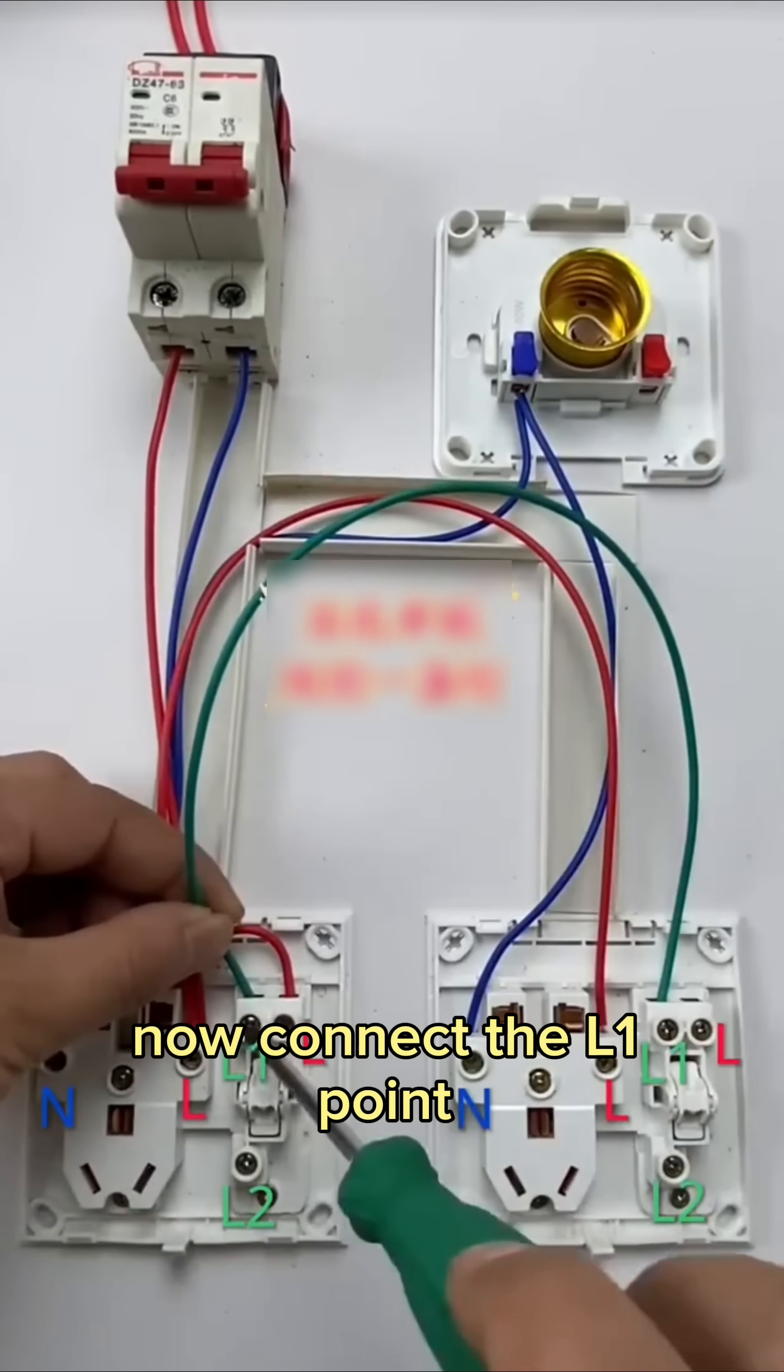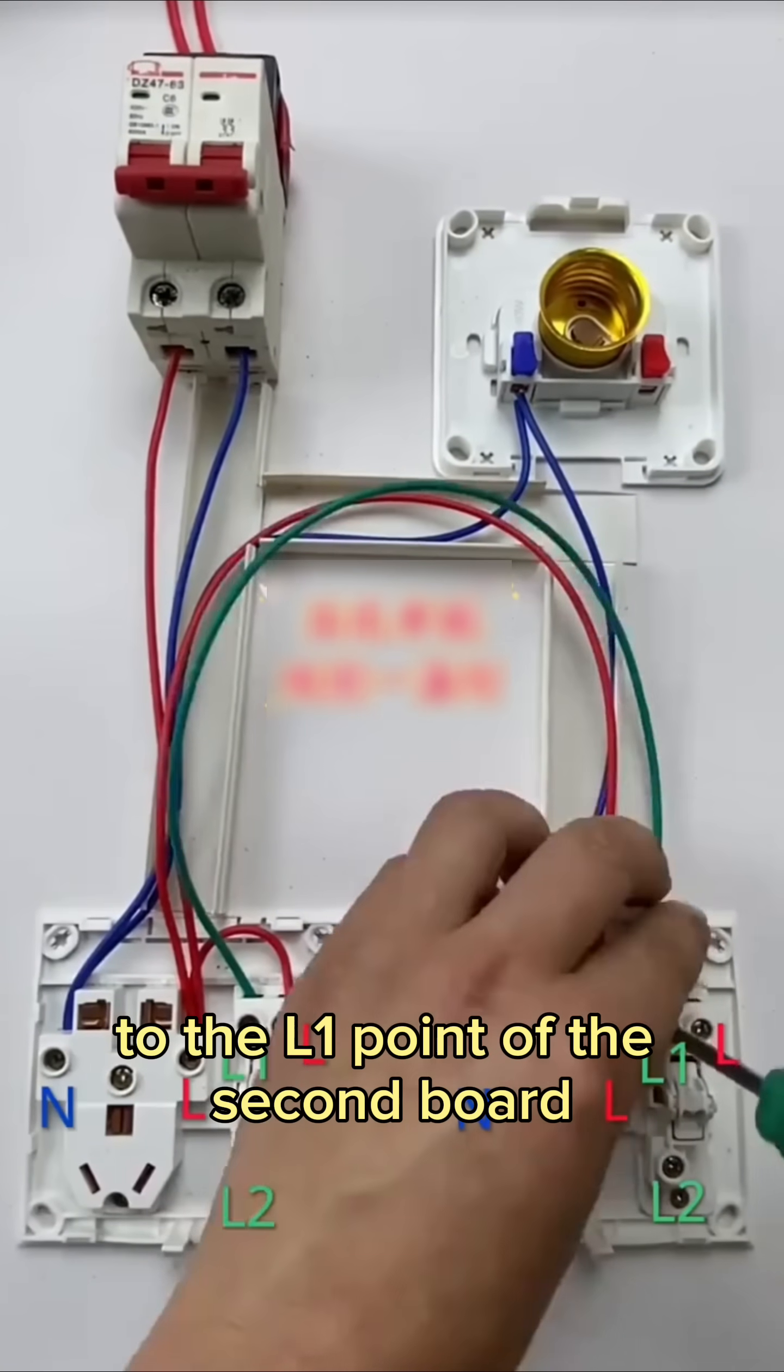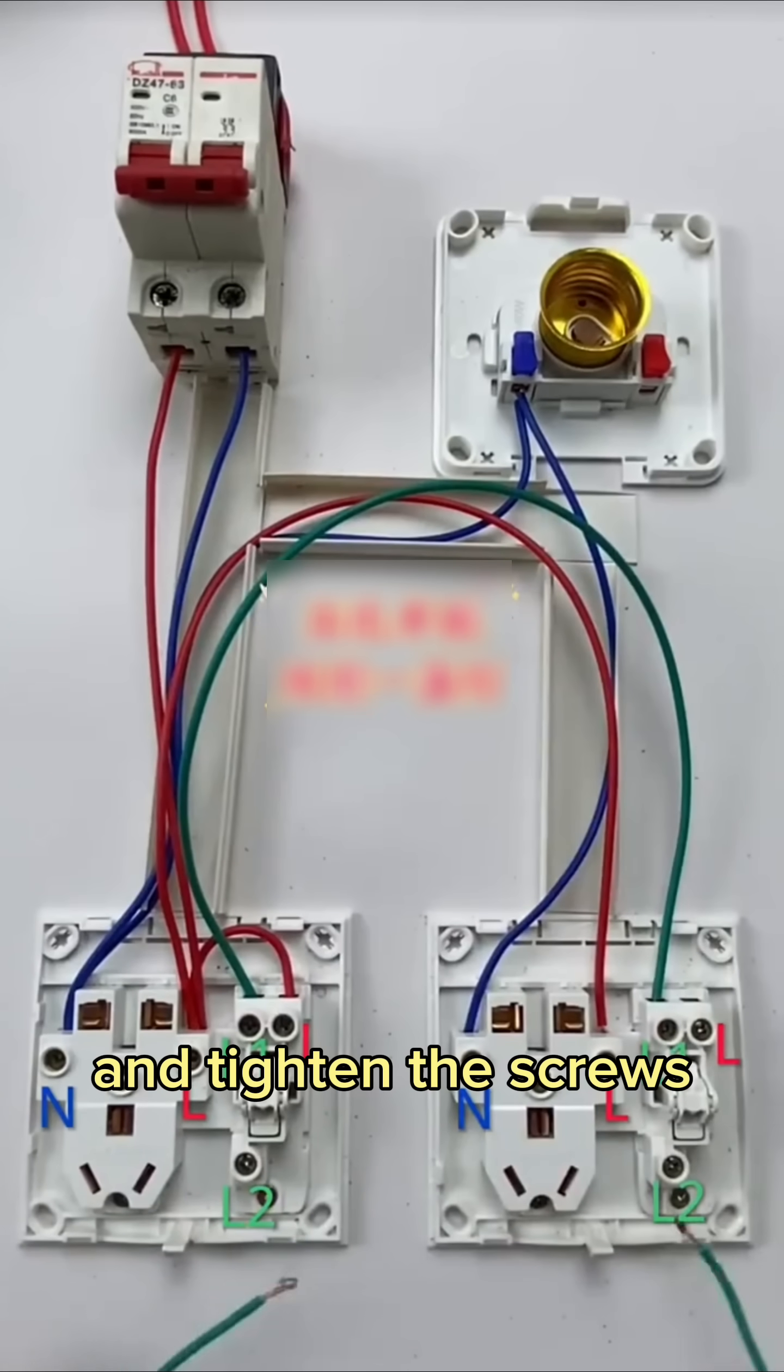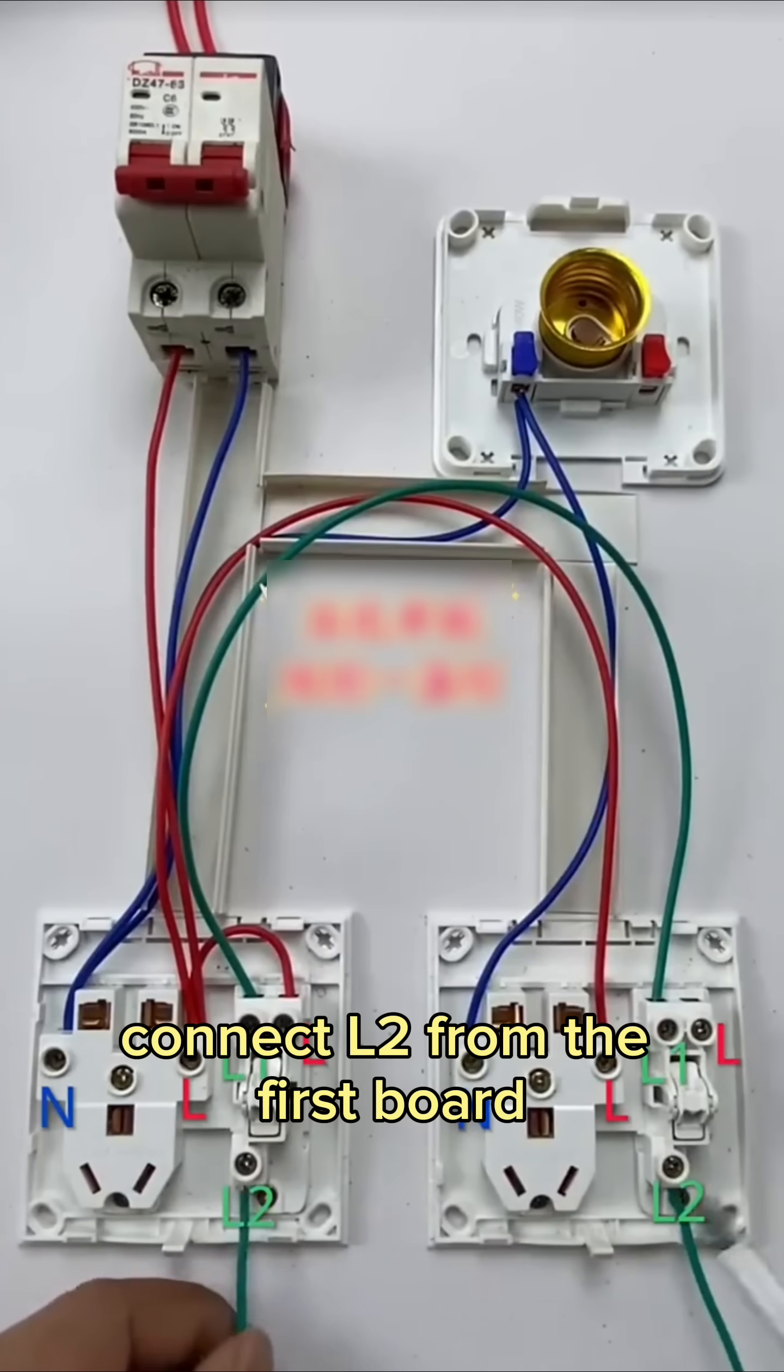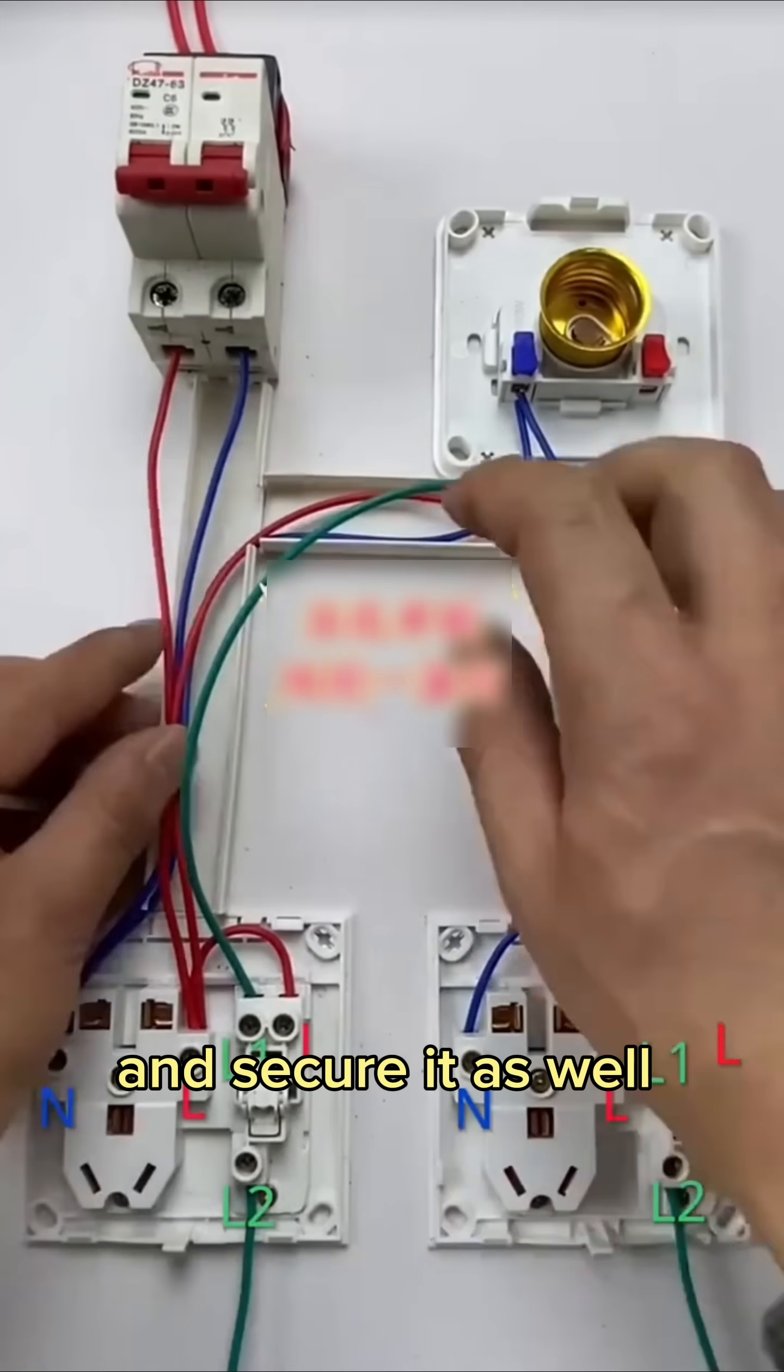Now, connect the L one point from the first board to the L one point of the second board and tighten the screws. Then, connect L two from the first board to L two of the second board and secure it as well.